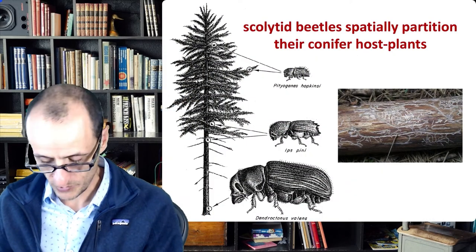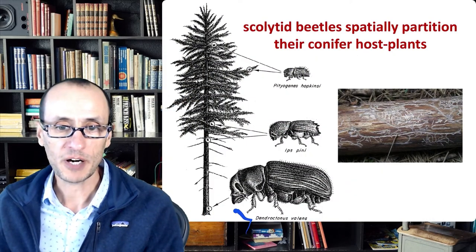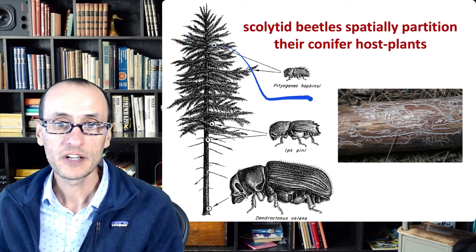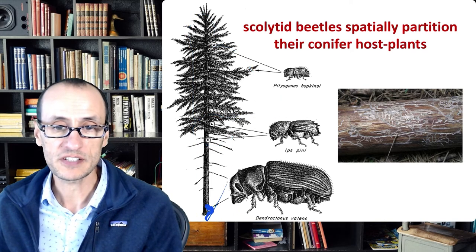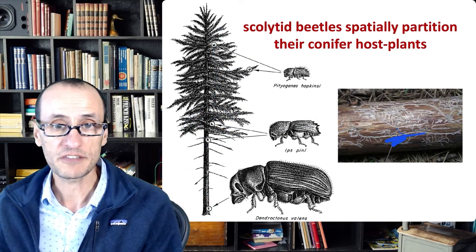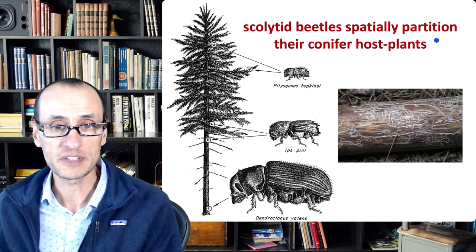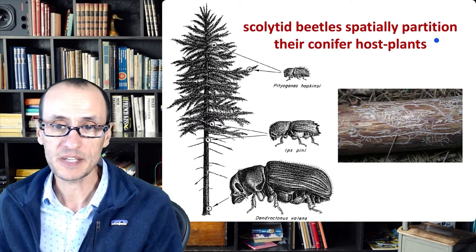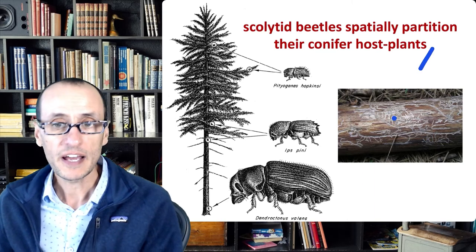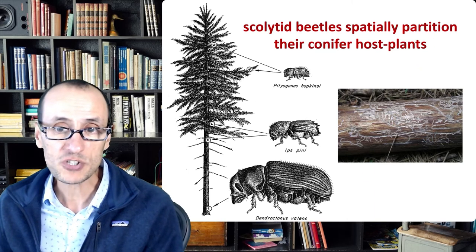Here's an example with bark beetles utilizing the same tree. Some are specialized to feeding on the lower part of the bark, some are specialized to feeding on the tips of the branches, while others are in the mid part of the canopy and may feed in slightly different ways. This spatial partitioning is an example of how competition may have shaped the utilization of a shared common resource.